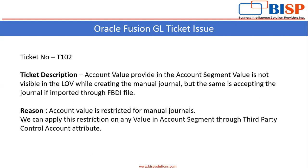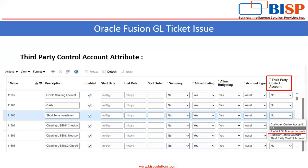Where can you find this Third Party Control Account attribute? We will see the screenshots. At the manage value level, you can see the attributes: Summary, Allow Posting, Allow Budgeting, Account Type, and there is one more attribute — that is Third Party Control Account.